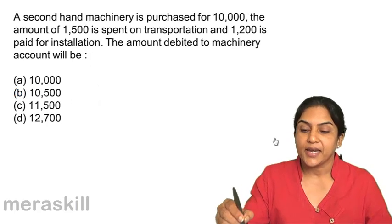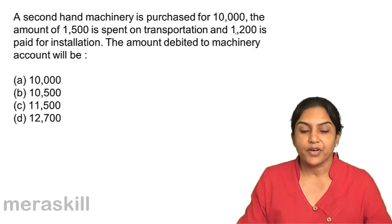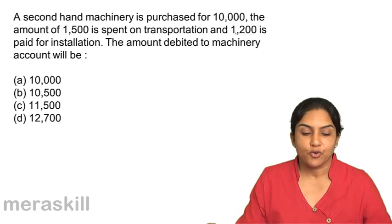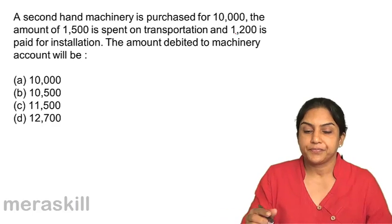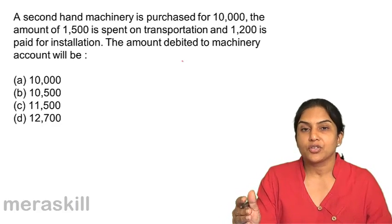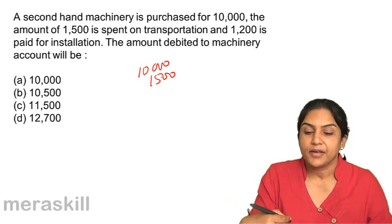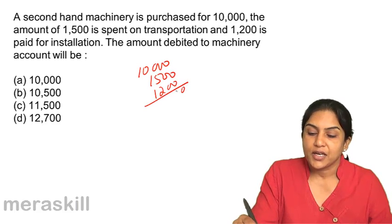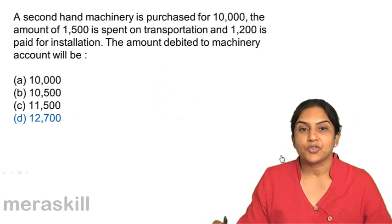Next: a second-hand machinery for Rs. 10,000 is purchased. Amount of 1,500 is spent on transportation and 1,200 is paid for installation. The amount debited to machinery account will be: A, 10,000; B, 10,500; C, 11,500; or D, 12,700. All costs until the machinery is installed and starts working must be added — 10,000 plus 1,500 plus 1,200 equals 12,700. The correct answer is D, 12,700.